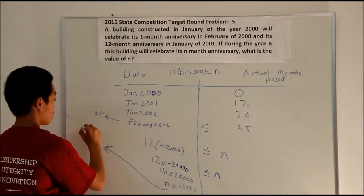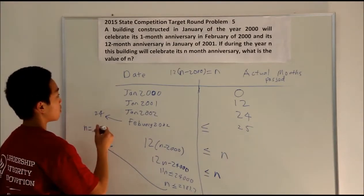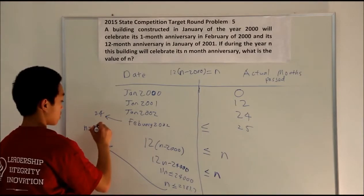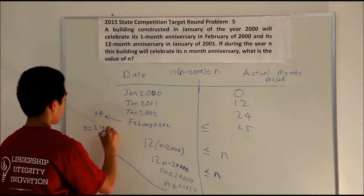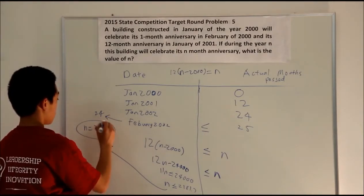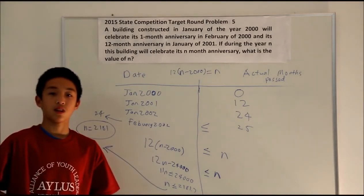We round that answer down to 2,181 because N must be less than 2,181.7. So the year in which the building will celebrate its Nth month anniversary is 2,181. Thanks for watching.